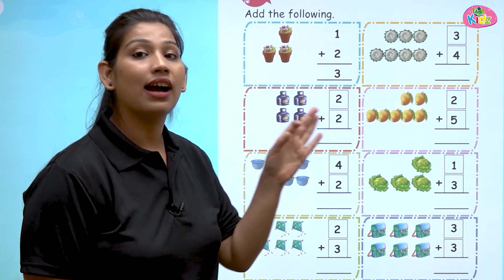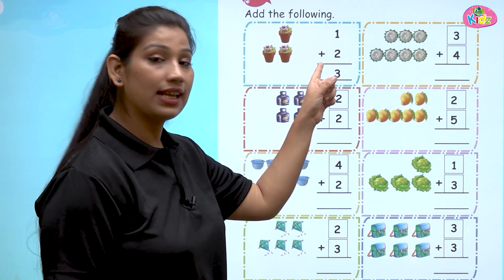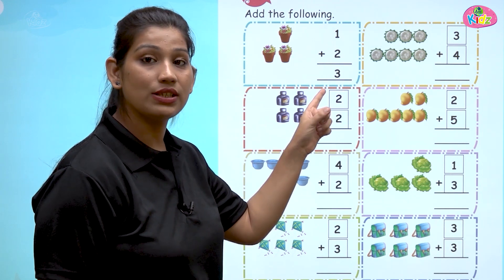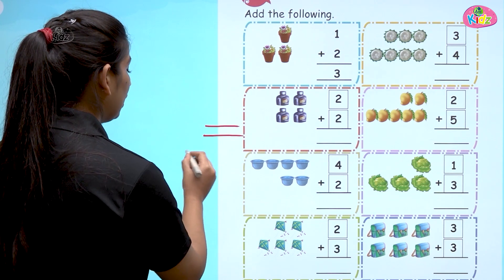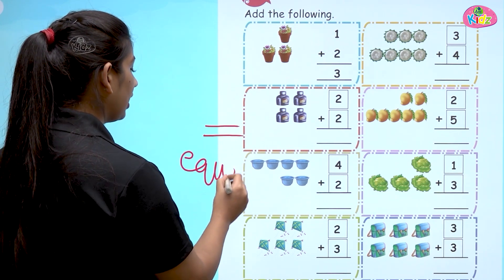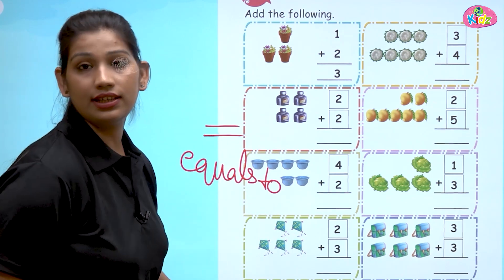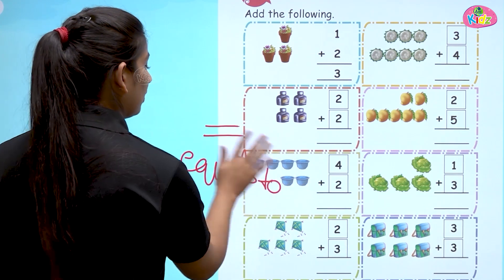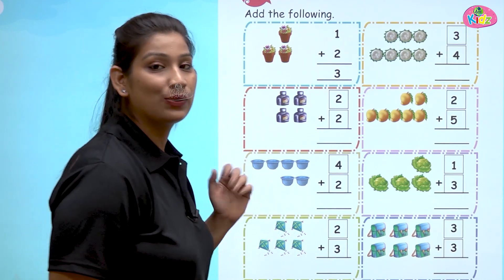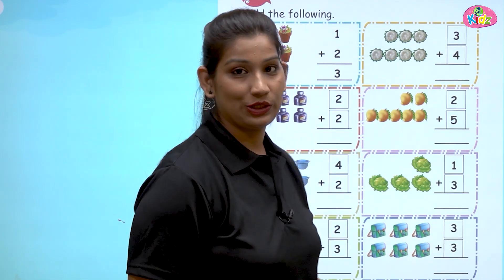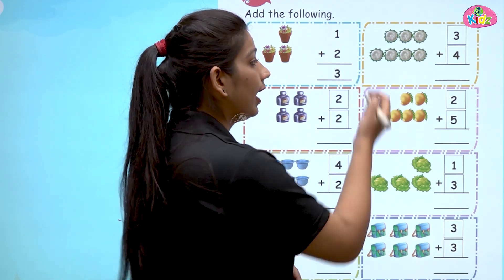One plus two, which is three. It is written here: three. One plus two is three. We read it as: one plus two is equals to three. This is the sign of equals to. So we say one plus two is equals to three.